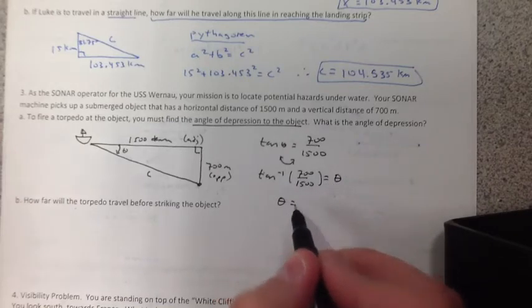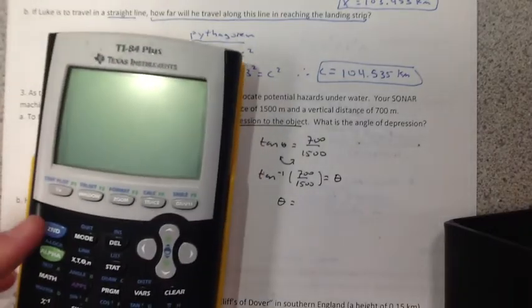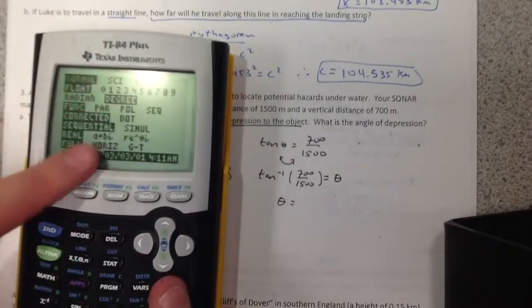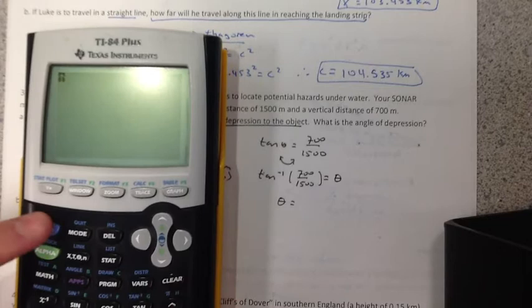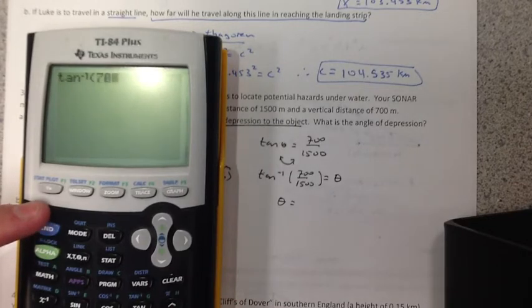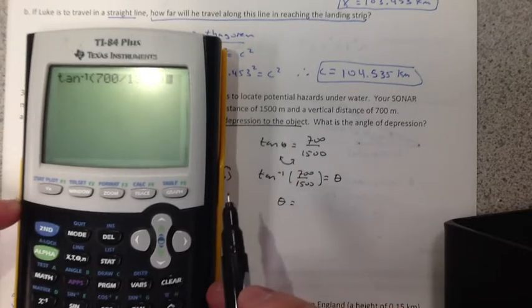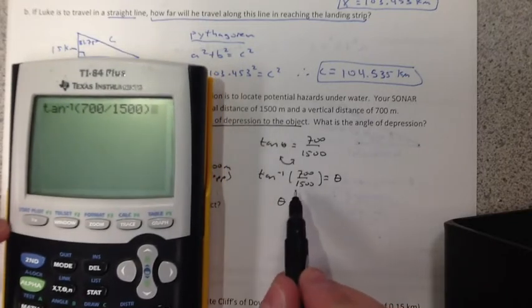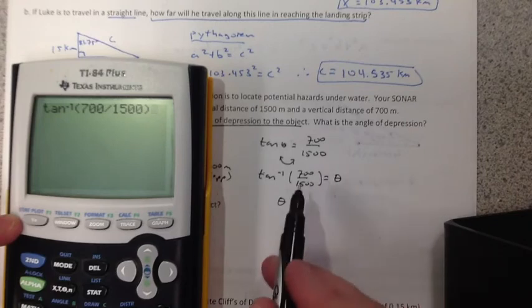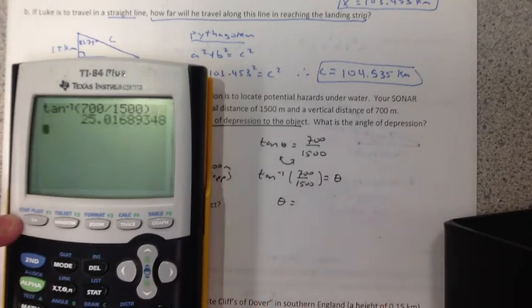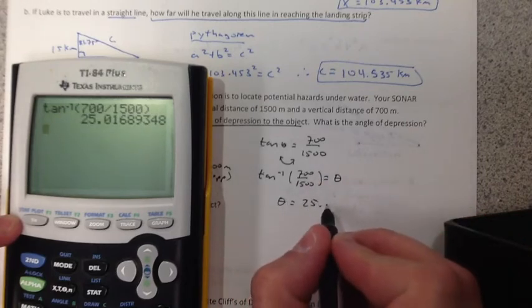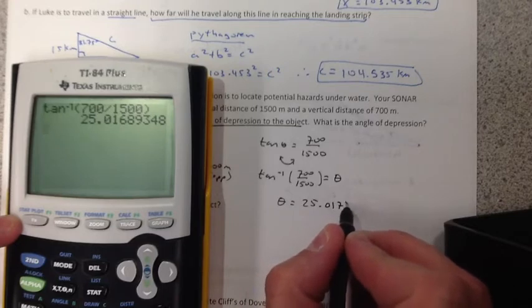So solving that using your calculator. Make sure you're in the right mode, degree mode. Second tangent, 700 divided by 1,500. I like writing it this way, so in case I make a mistake, I can still get points for at least writing out the correct formula. Hit enter, and we get about 25.017 degrees.